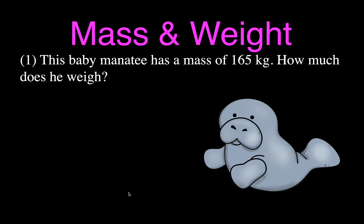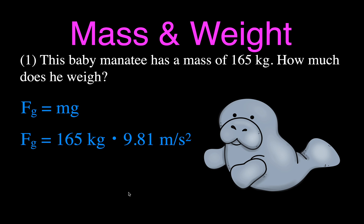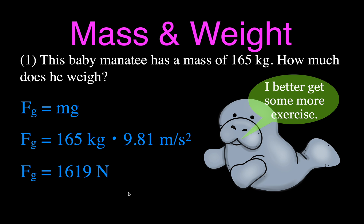Here's our first example — a baby manatee with a mass of 165 kilograms. We want to find his weight. Using the equation Fg equals MG, we multiply the mass times the acceleration due to gravity. Assuming this is on the surface of the Earth, that's 165 kilograms times 9.81 meters per second squared, which gives us a weight of 1,619 Newtons. That sounds like a lot — maybe that's why we don't use Newtons in everyday life, since it's about ten times what we'd normally say!